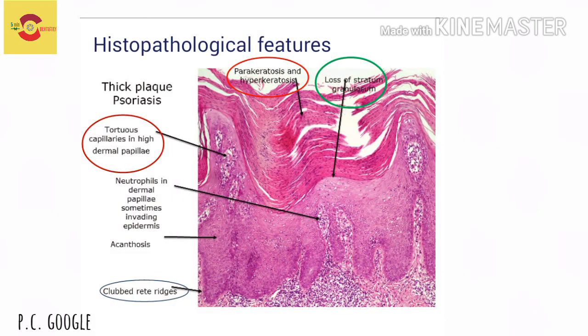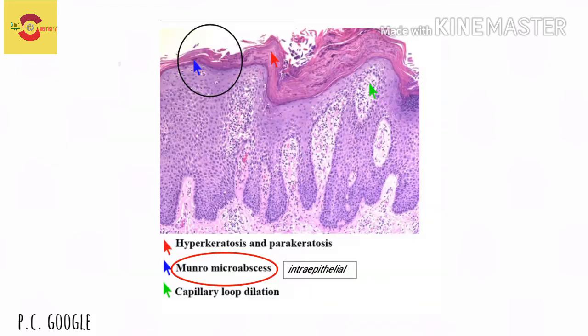The key histopathological features of psoriasis include clubbed rete pegs and tortuous capillaries in high dermal papilla — which explains the Auspitz sign — along with parakeratosis and hyperkeratosis, loss of stratum granulosum, and Munro's micro-abscesses seen in the intraepithelial region.